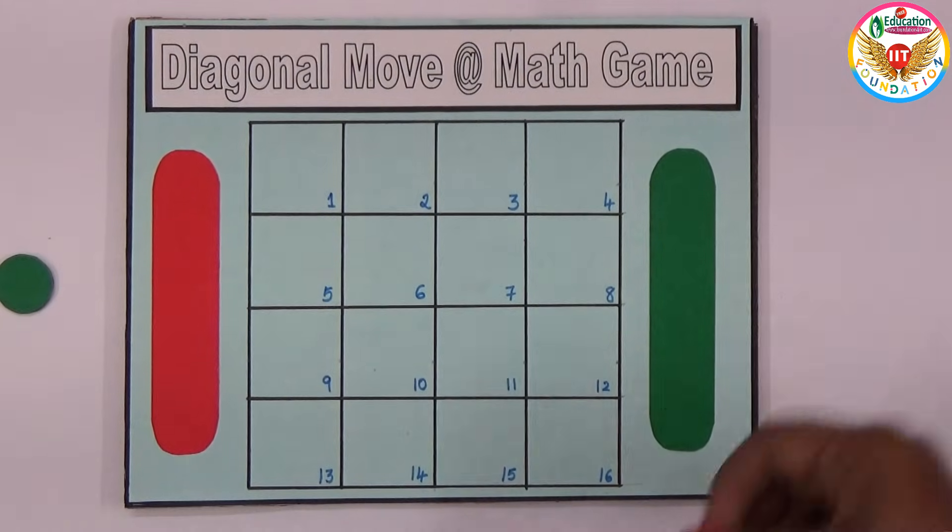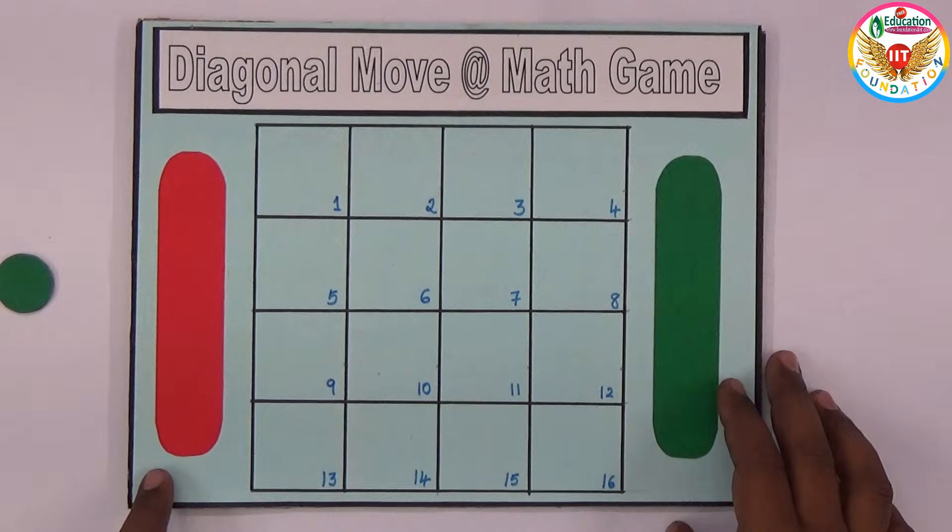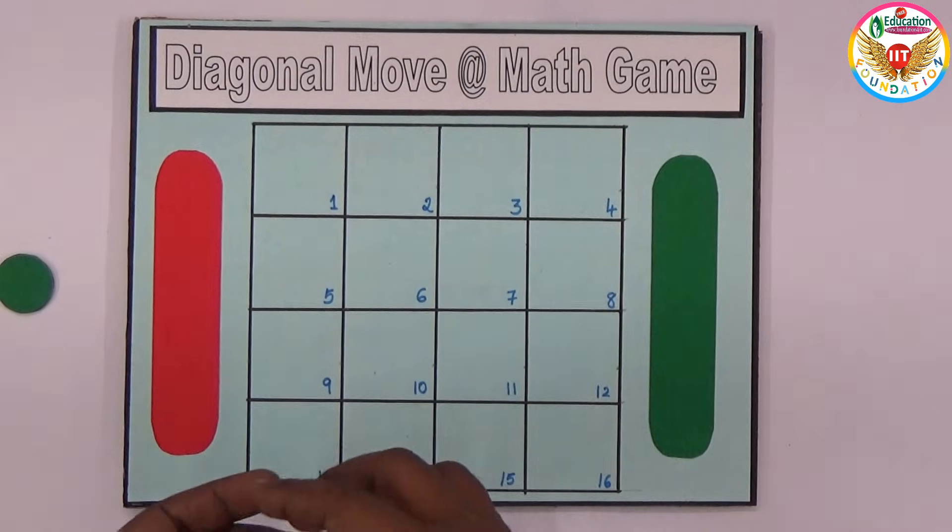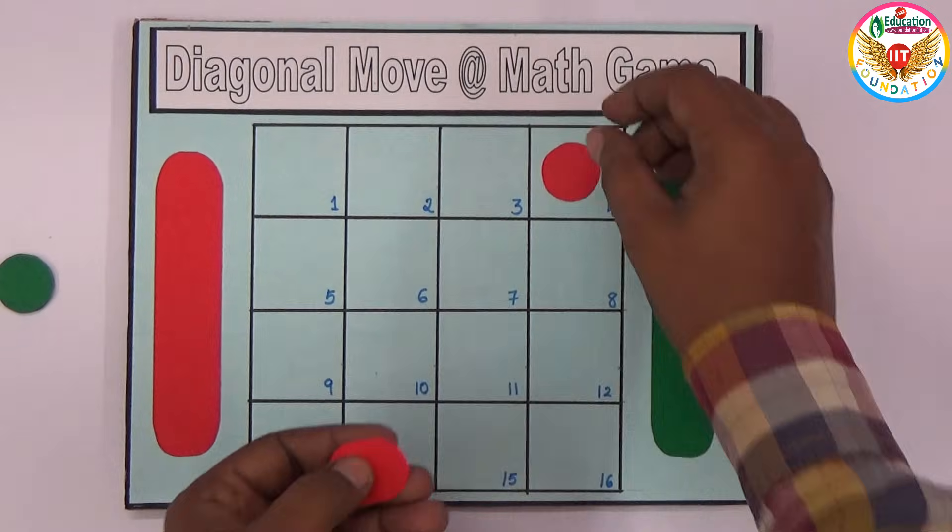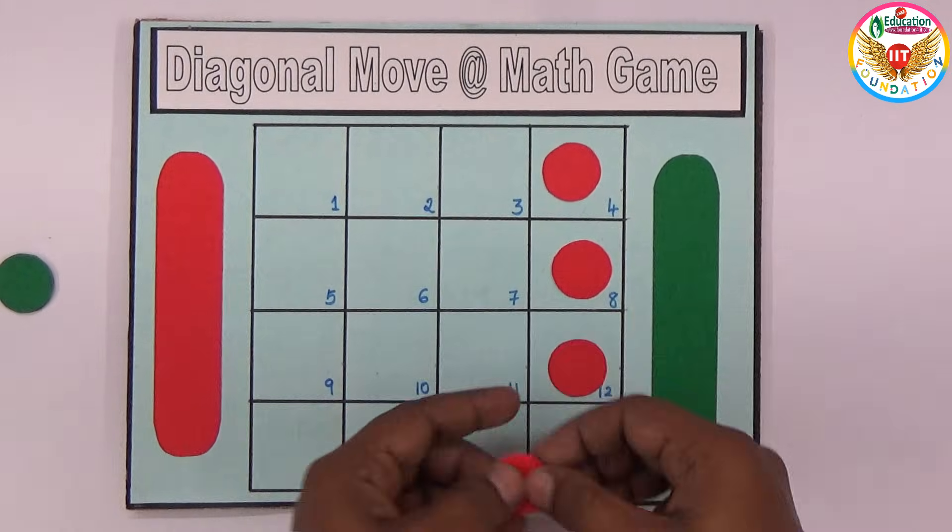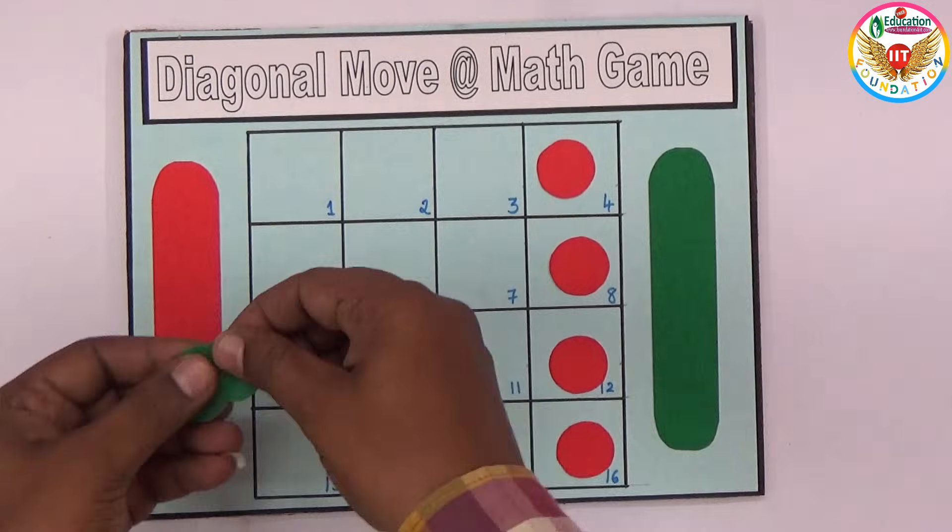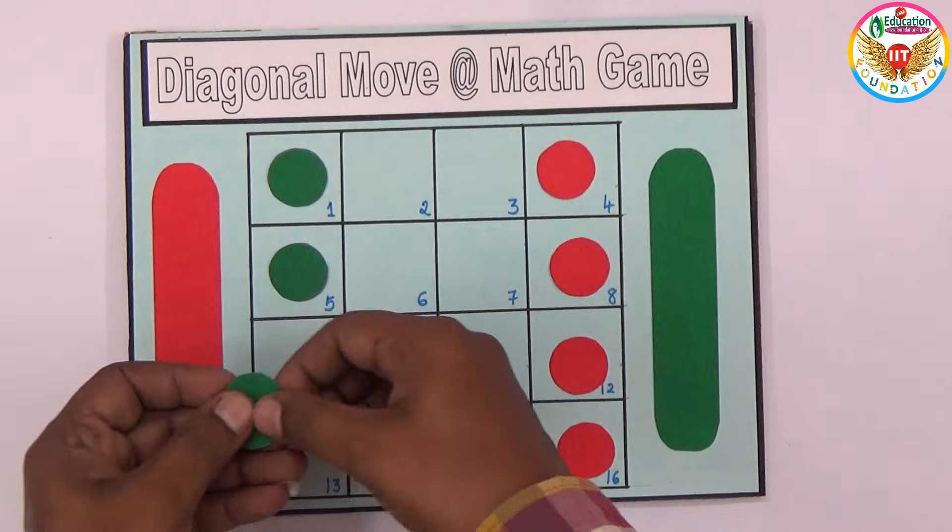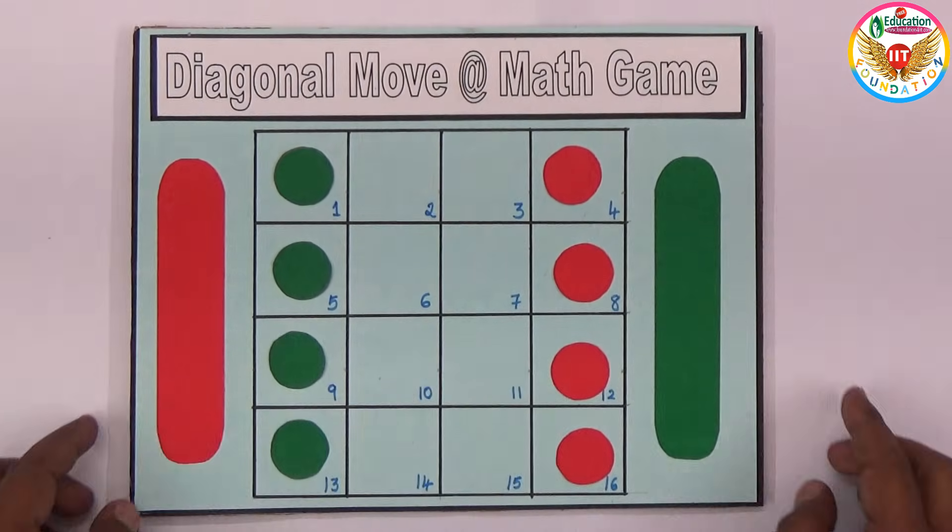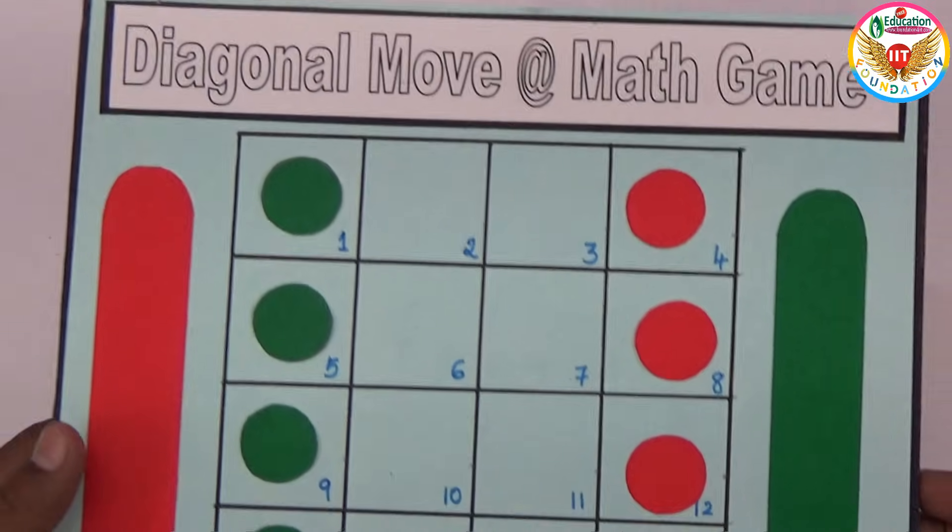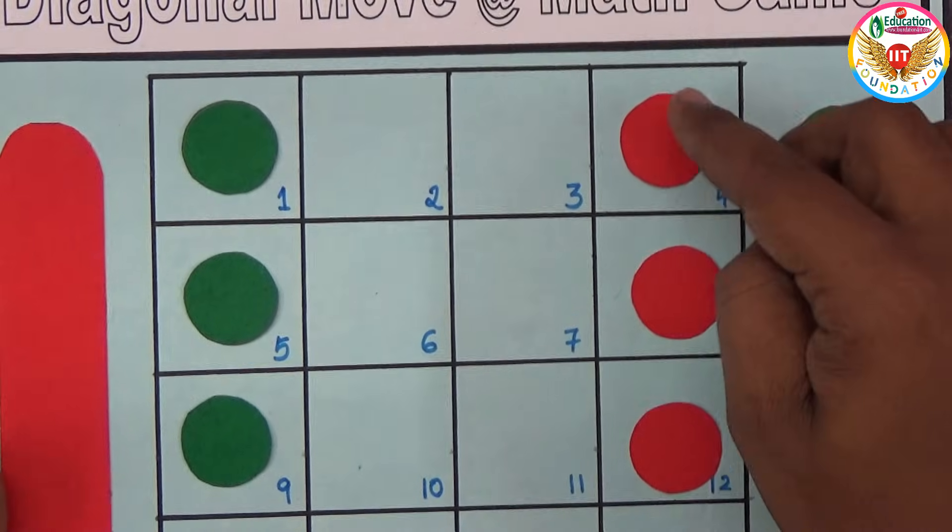Now let's see what this game is and how to play. One side is red, one side is green. On the red side you should keep the green pieces, and on the green side you can keep the red pieces.